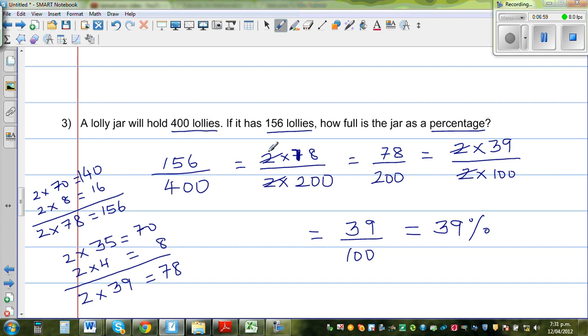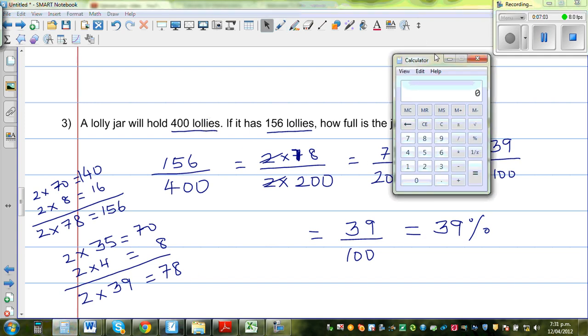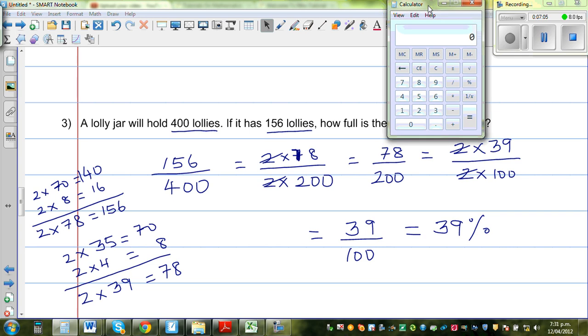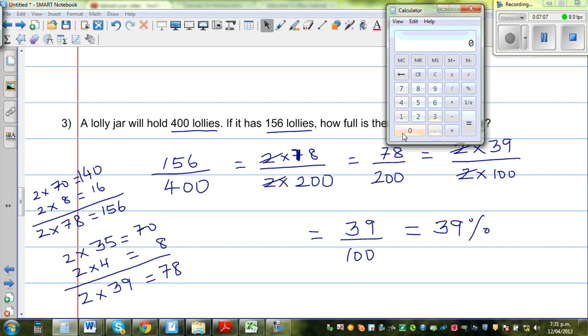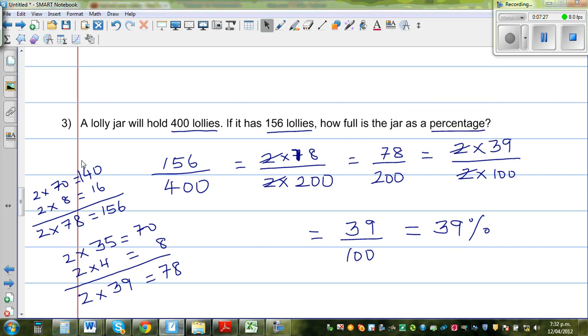And if you want to do on a calculator, if you have a calculator, so you can get, this is a simple Microsoft calculator. So you can go 156, 156 divided by 400. That will give you a decimal answer, which is 0.39. So this is out of 1. Times it by 100. Times it by 100. That will give you 39%.